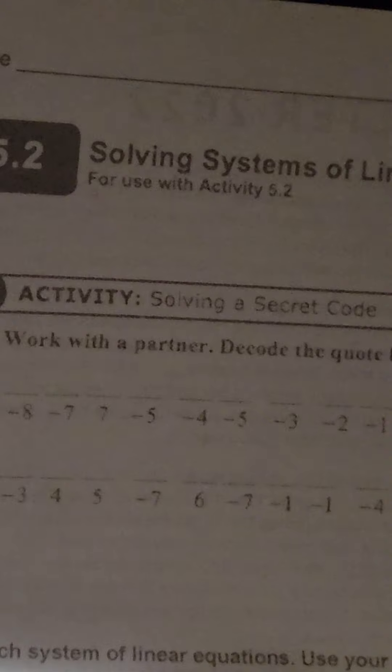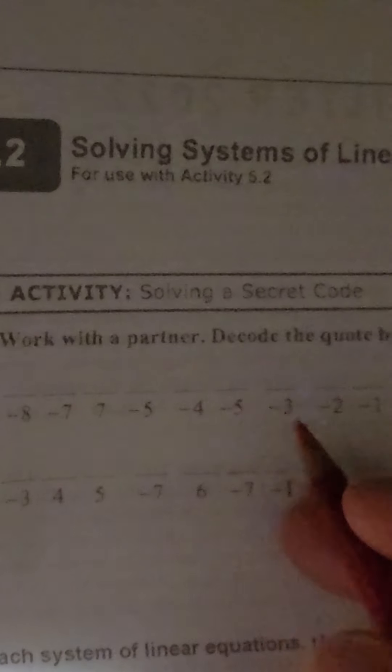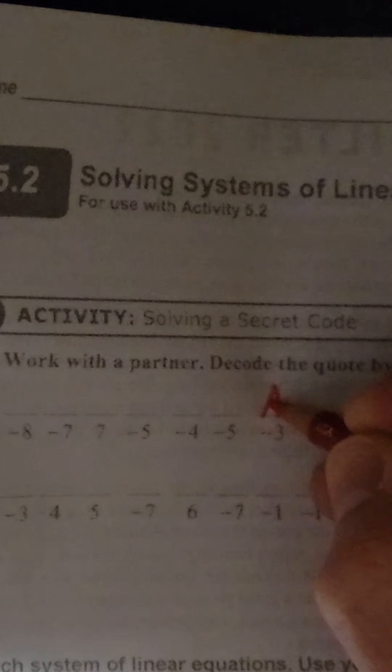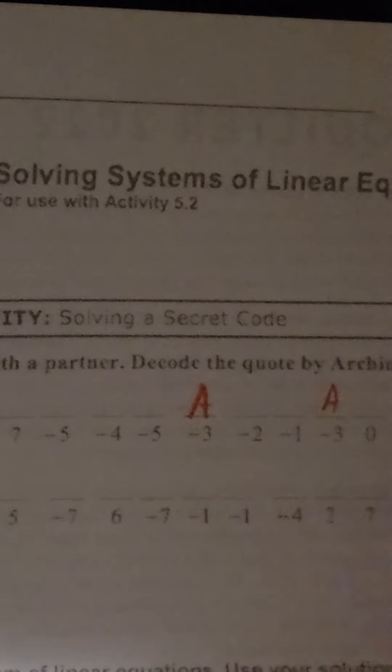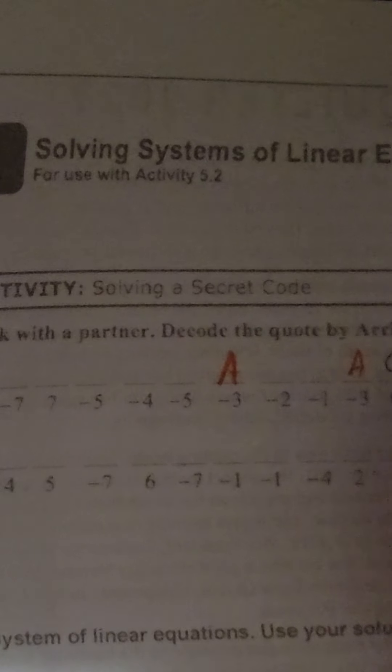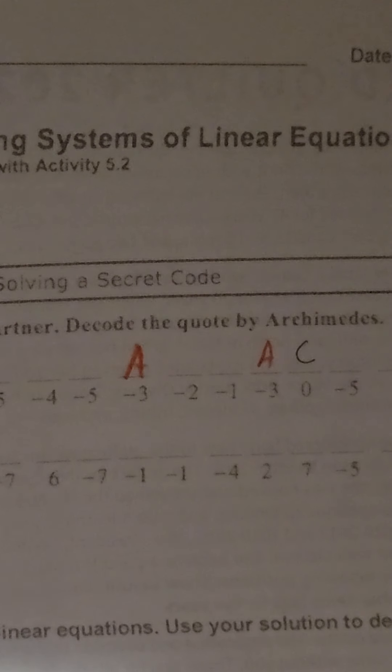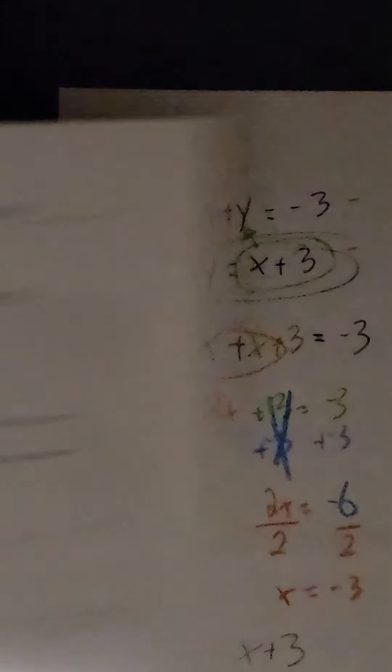Which means when you're looking up here in the puzzle, anywhere that you see a negative 3, you need to put the letter A in. So as you're scrolling through, a negative 3, you put an A in, and you find all the negative 3s, just the negatives not the positives. And you put all those A's there, and then that 0 is a C. So anywhere on this worksheet you find a 0, put in a letter C, and when you're done with that, if you spell a word that doesn't make sense, go back and check our work.